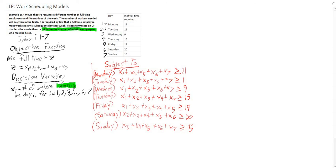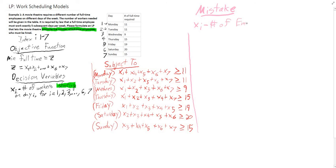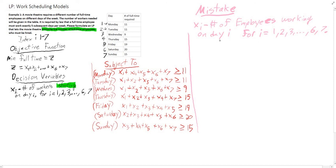A lot of people make the mistake of defining — and I'll write this so no one mistakes this — this is a mistake that a lot of people make. They define the decision variable as x of i as the number of employees working on day i, for i equals 1 through 7. So instead, you can see that this is just the number of employees working on a day, as opposed to the number of workers starting on a day. Very, very, very important distinction.